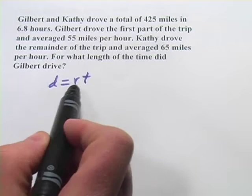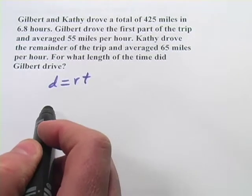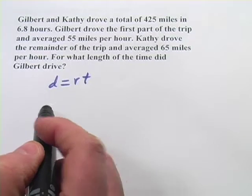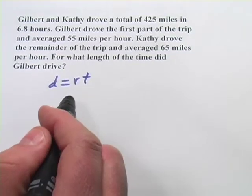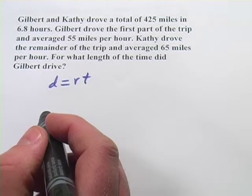So we're going to actually have two different distance equals rate times time formulas for this one, equations. We're going to have a system of equations that we need to solve. The tricky part is teasing out what those two equations should be.